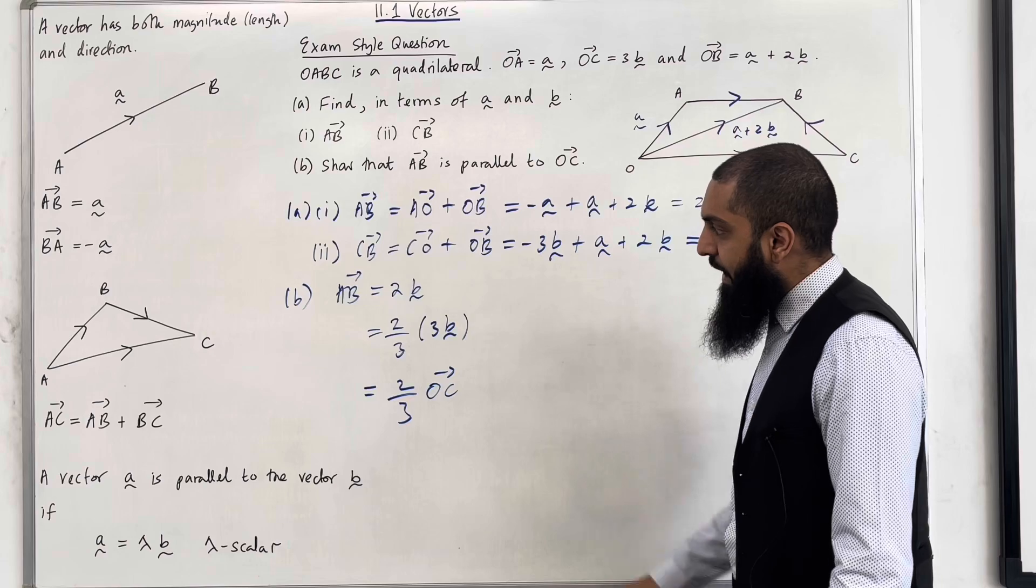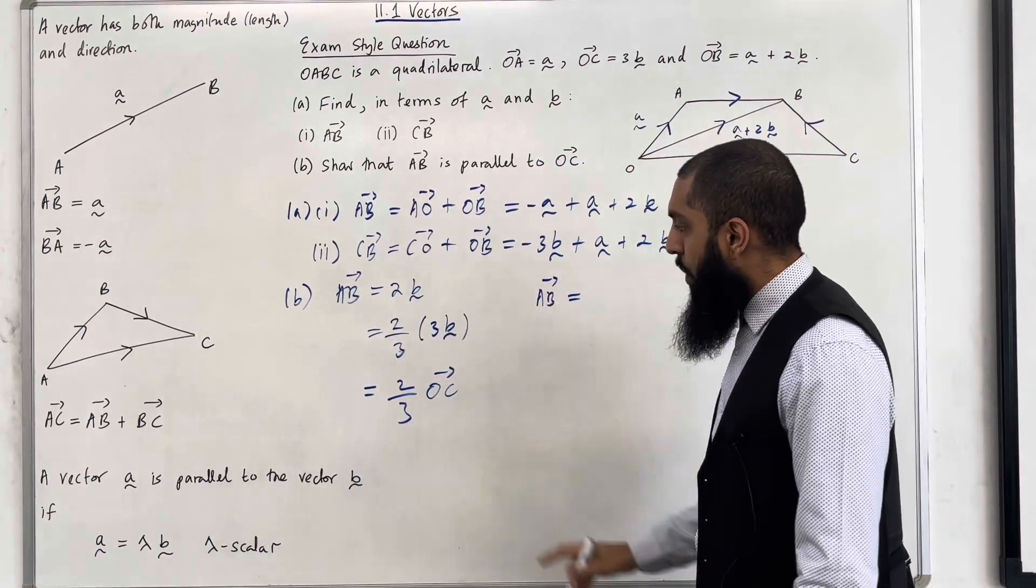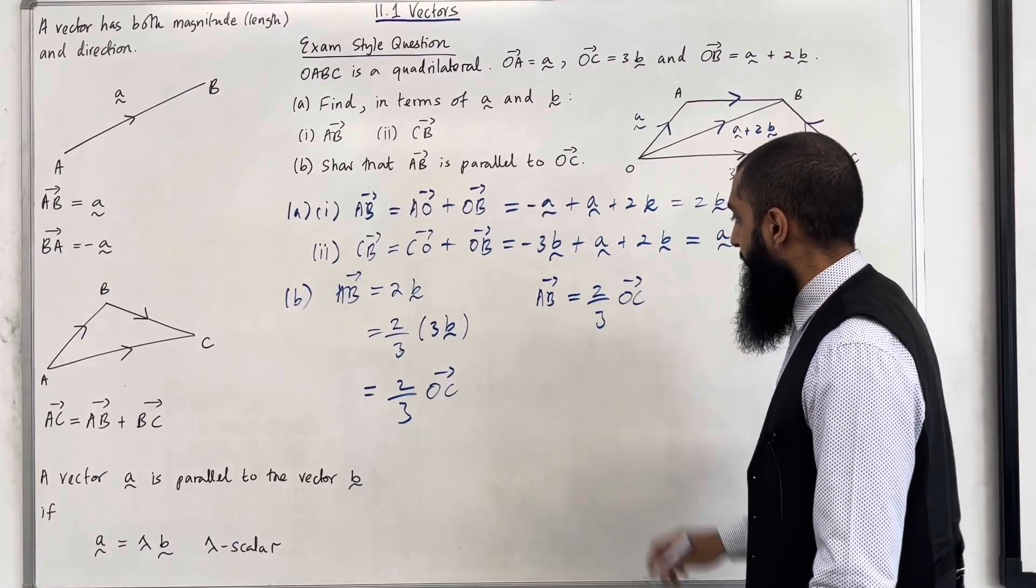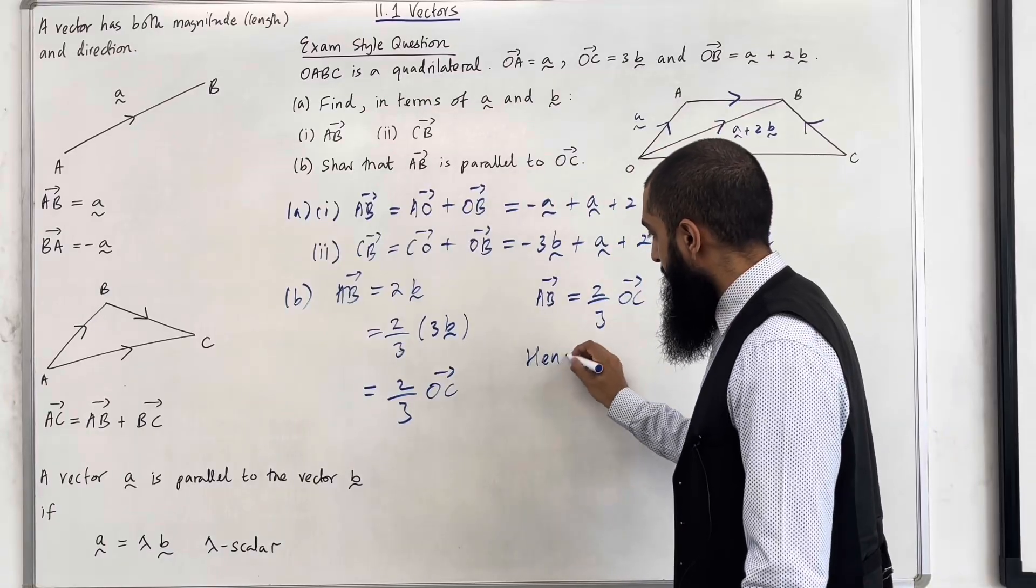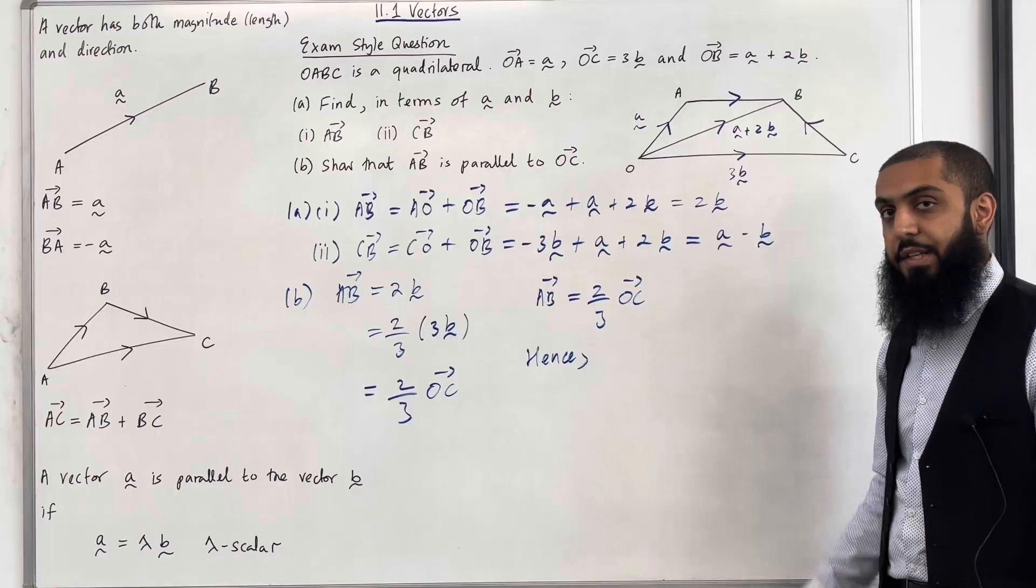But this is basically 2 over 3 lots of the vector O to C. So what we have here is that the vector A to B is equal to 2 over 3 lots of the vector O to C. Hence, we can clearly see that the vector A to B is a scalar multiple of the vector O to C.